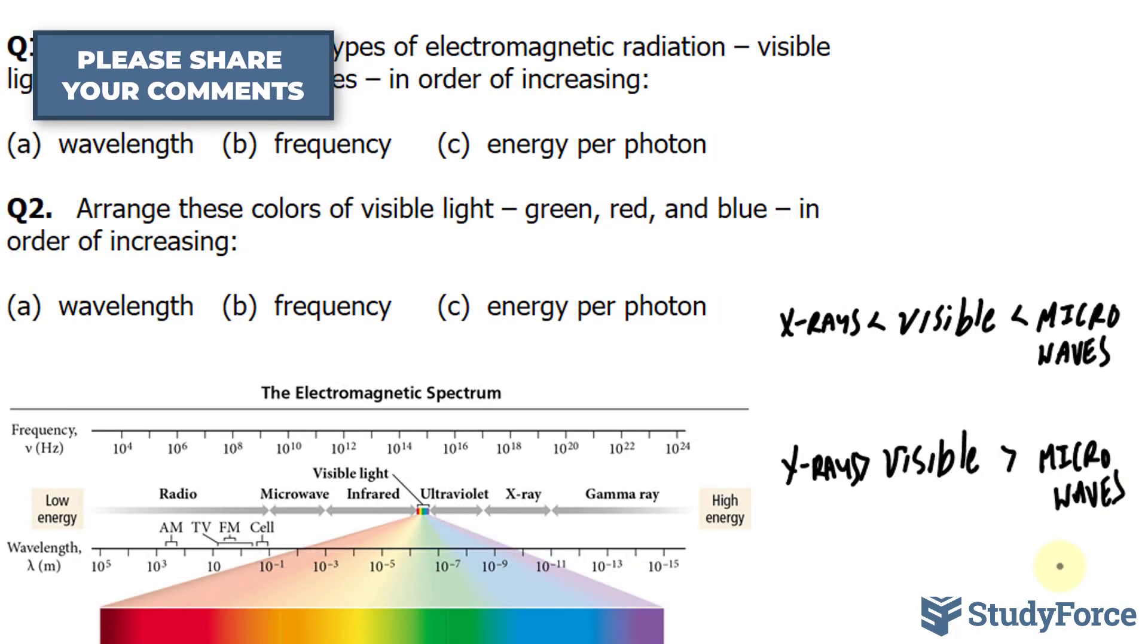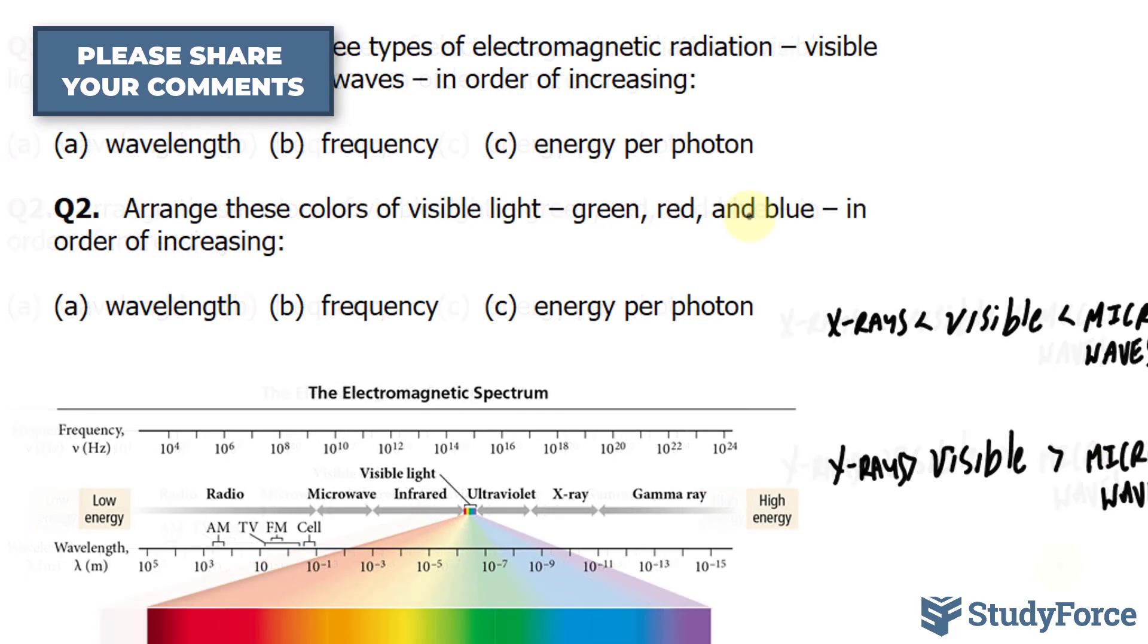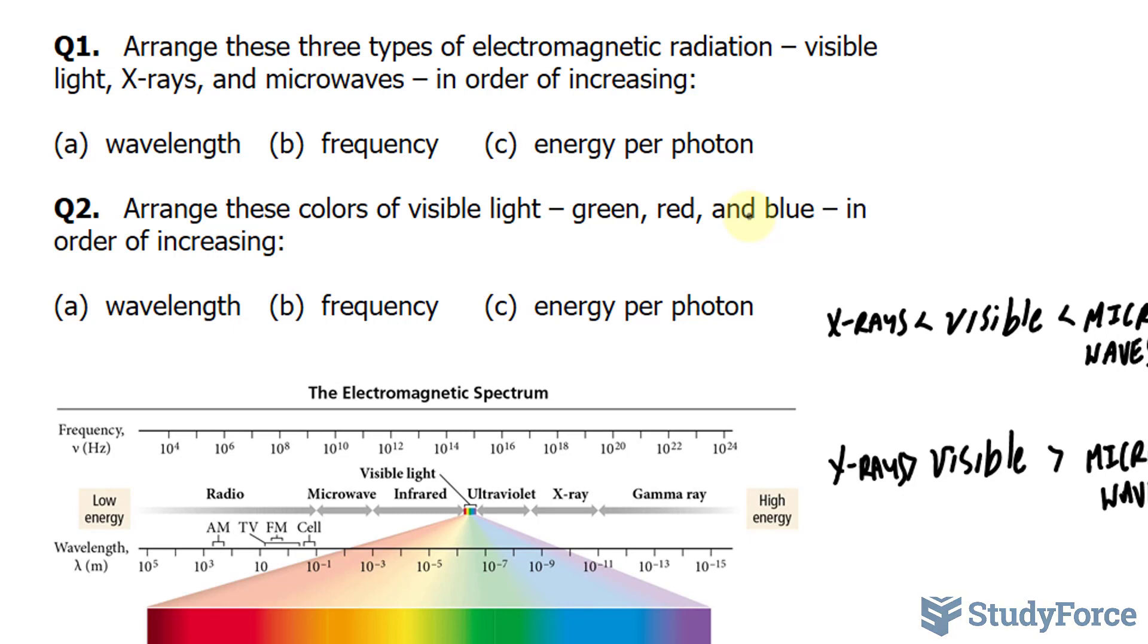Finally, we'll look at energy per photon. Energy per photon decreases with increasing wavelength but increases with increasing frequency. As you can see in this diagram, energy increases as wavelength decreases.